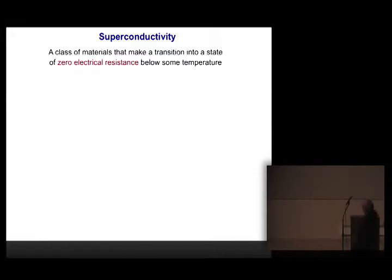So superconductivity, as Tony mentioned, is a phenomenon in which materials make a transition to a state of zero electrical resistance, below some temperature. Now, most materials we know, when you put current through them, they develop a voltage and they dissipate heat. That's a good thing for things like heaters and toasters, but pretty much a bad thing for almost everything else.